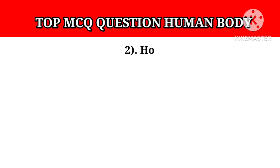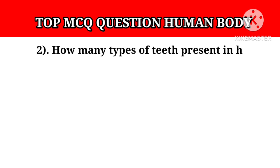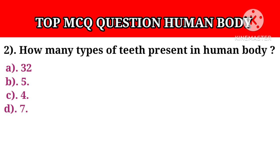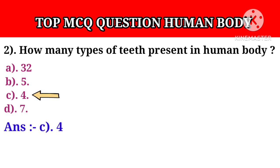Question number 2: How many types of teeth are present in the human body? Option A: 32. Option B: 5. Option C: 4. Option D: 7. Answer C: 4.